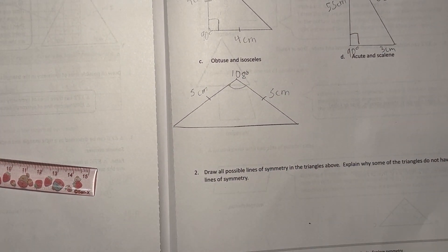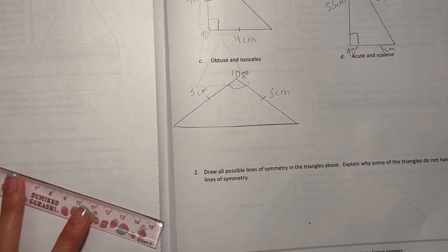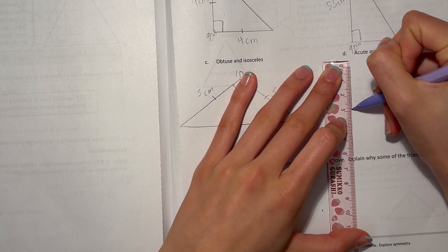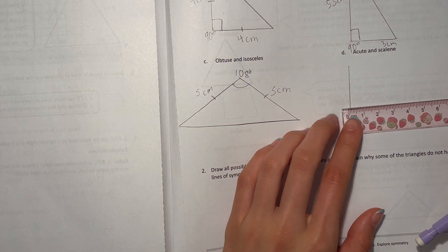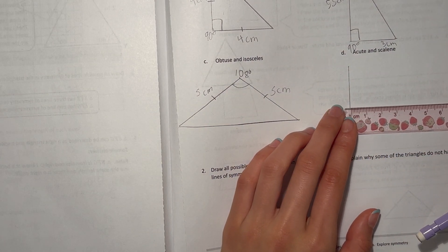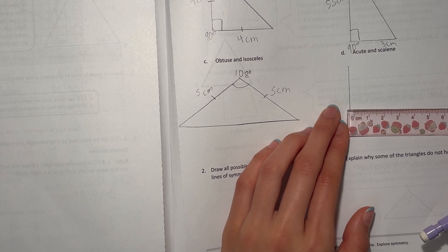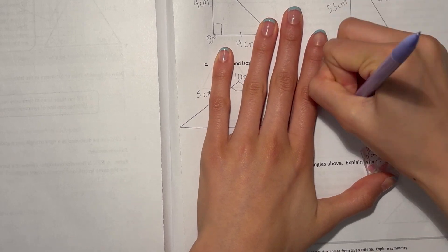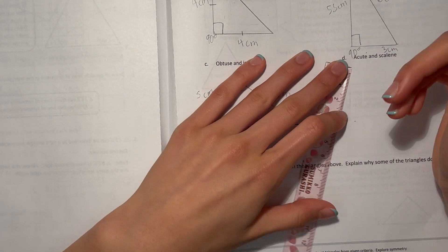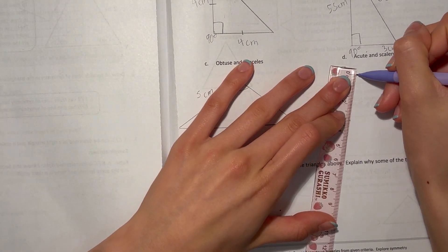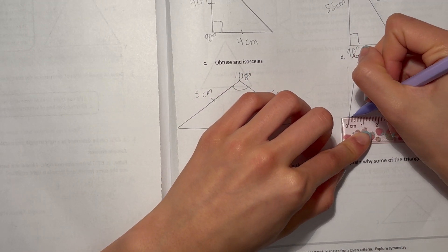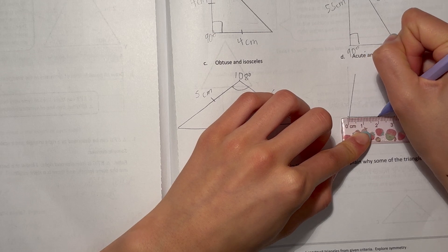And D: acute and scalene. So it has to be acute and different side lengths. All right, let's start. We can do three centimeters here. Let's see, I mean don't make it right. Okay, so let's do it like that, kind of three centimeters here. Just kind of make it up, two centimeters here.